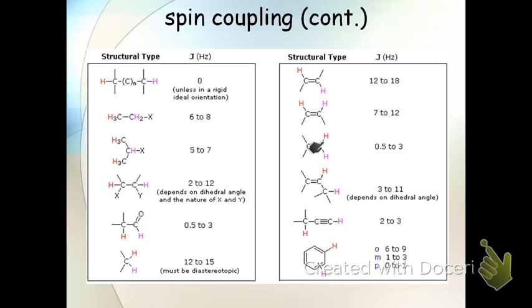And if they're vicinal, that is if the hydrogens are on the same carbon, the coupling constant is even weaker. So now, going back to the previous slide,